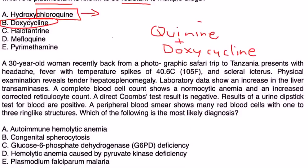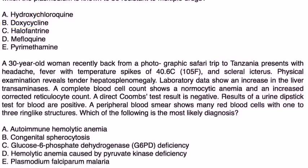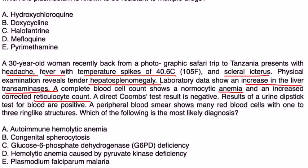Vignette three: A 30-year-old woman recently back from a photographic safari in Tanzania presents with headache, fever with temperature spikes of 40°C, and scleral icterus. Physical exam reveals tender hepatosplenomegaly. Labs show increased liver transaminases, microcytic anemia, increased reticulocyte count, negative direct Coombs test, and a positive urine dipstick for blood. Peripheral blood smear shows many red blood cells with one to three ring-like structures. The most likely diagnosis is plasmodium falciparum malaria.